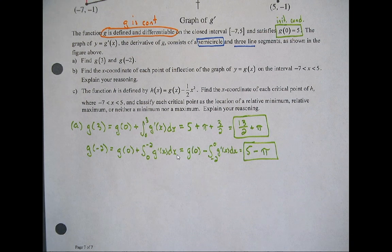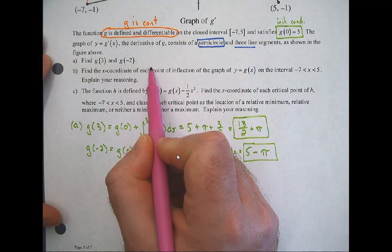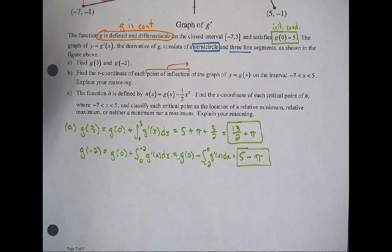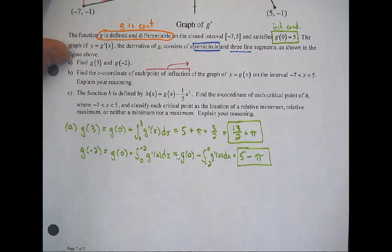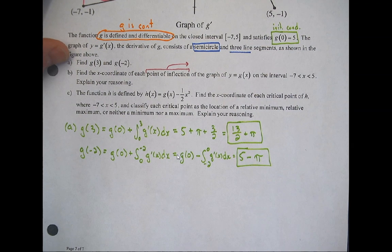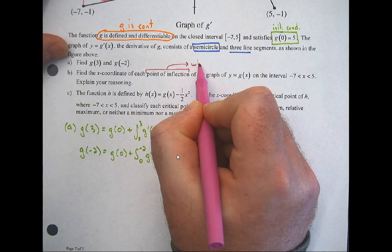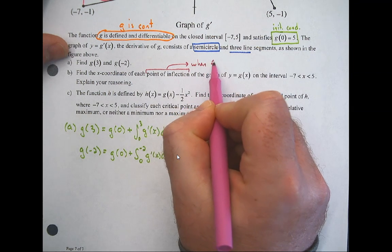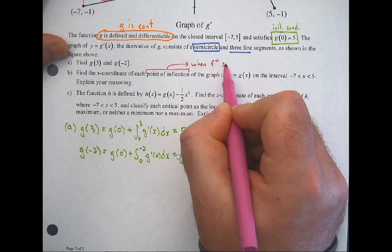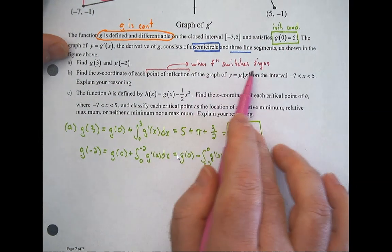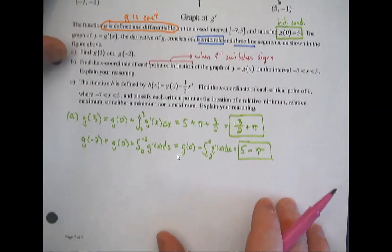Find the x-coordinate of each point of inflection of the graph of g on the interval [−7, 5]. Points of inflection occur when g'' switches signs — from positive to negative or vice versa. First, find where g'' equals 0 or does not exist. Since g'' is the derivative of g', we look at the graph of g' for where the slope is zero (at x=0) or where the derivative doesn't exist (at x=−2, x=2, x=3).